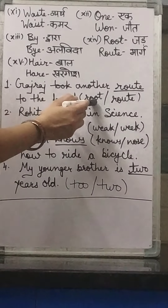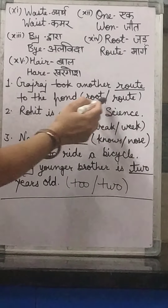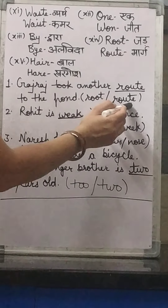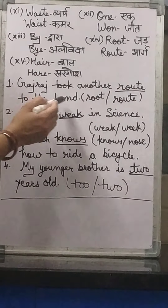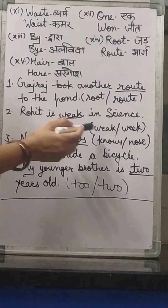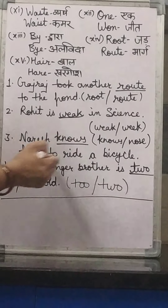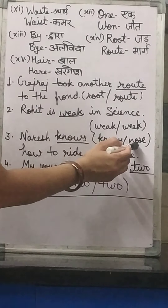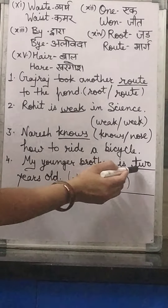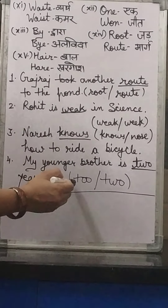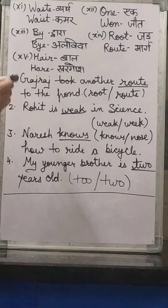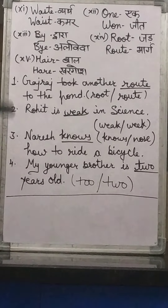Let's look at sentence examples. The sound is the same for these words but spellings and meanings are different — that is why they are called homophones. For example: 'Kajira took another R-O-U-T-E (route) to school.' Here route means rasta. 'Rohit is W-E-A-K (weak) in science' — weak means kamzor. 'Naresh K-N-O-W-S (knows) how to ride a bicycle.' And: 'My younger brother is T-W-O (two) years old.' So, sound is the same but spellings and meanings are different — these are called homophones.